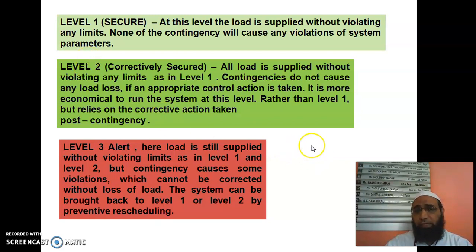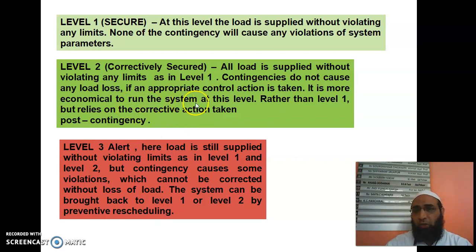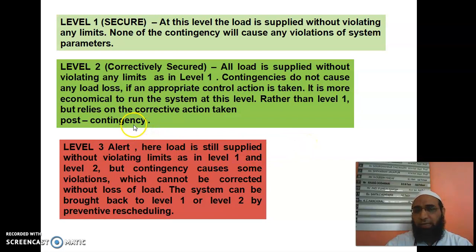Level 2 is also called the correctively secured level. All load is supplied without violating any limits, as in level 1. Contingencies do not cause any load loss if appropriate control action is taken. It is more economical to run the system at this level rather than level 1, but it relies on corrective actions taken after post-contingency events.